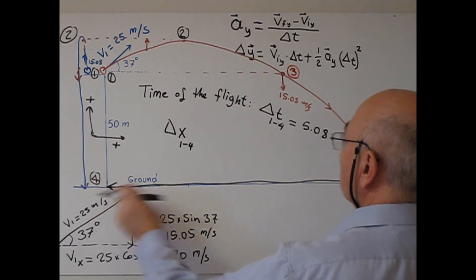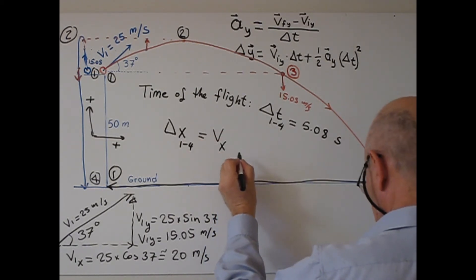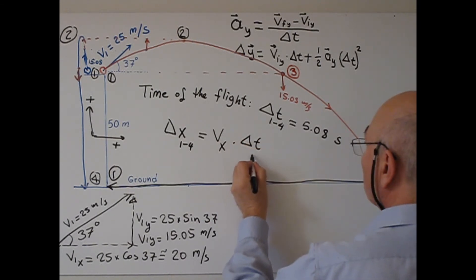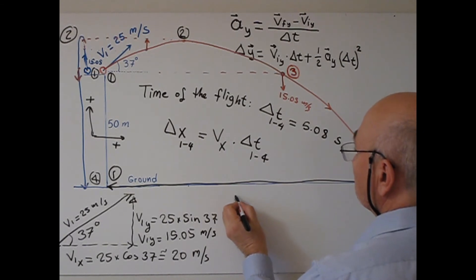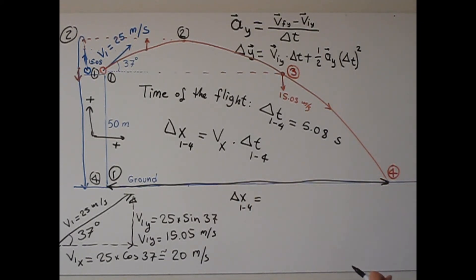Since the horizontal component is constant velocity, in other words uniform motion, we can use this formula to find delta x from 1 to 4 equals vx times delta t14. Delta x14 equals vx, which is always constant, 20 meters per second, times 5.08 seconds. Delta x14 will be 101.6 meters.